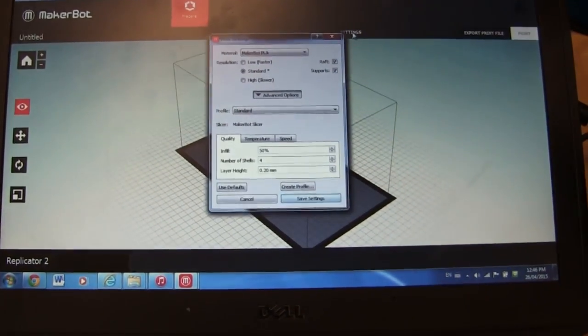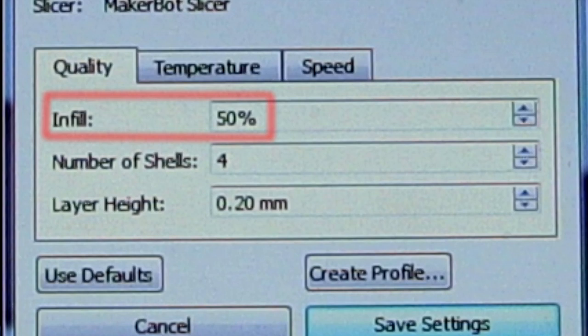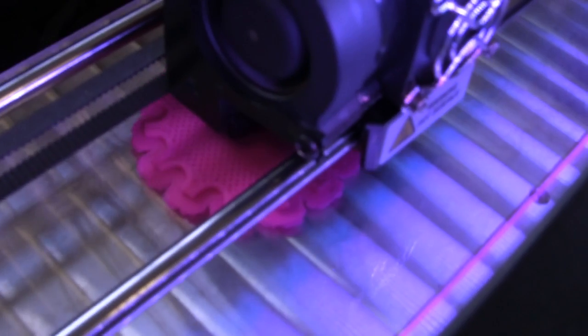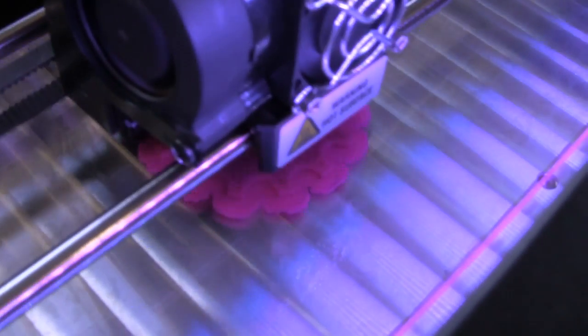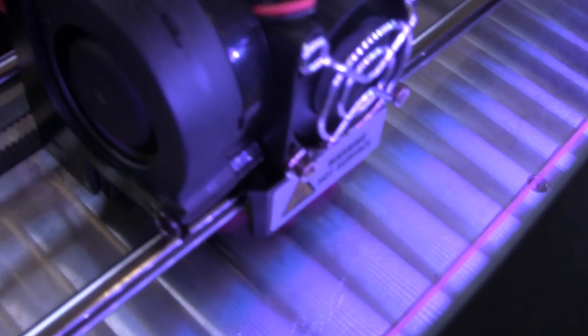I next brought up the settings window. The infill is how much of the inside is filled in. Here's what it did with my selection of 50% infill. This saves on plastic and printing time. Since it was a sprocket, I wanted at least 50% for strength.